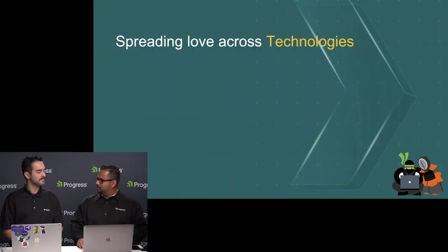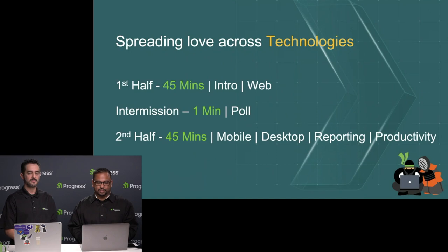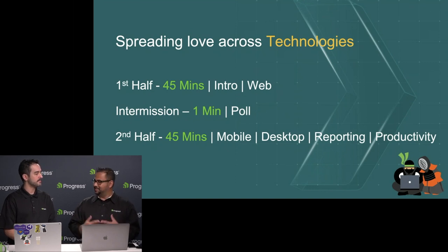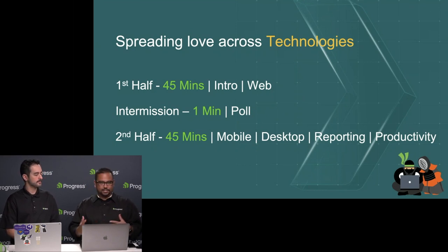So let's talk about what we are going to do over the next hour and a half. We are looking at the DevCraft suite, which is probably two dozen or so different products and technologies. We're going to do the first 45 minutes mostly on the web stuff — Blazor and all the cool things with web — then take a quick break, then cover mobile, desktop, and productivity.